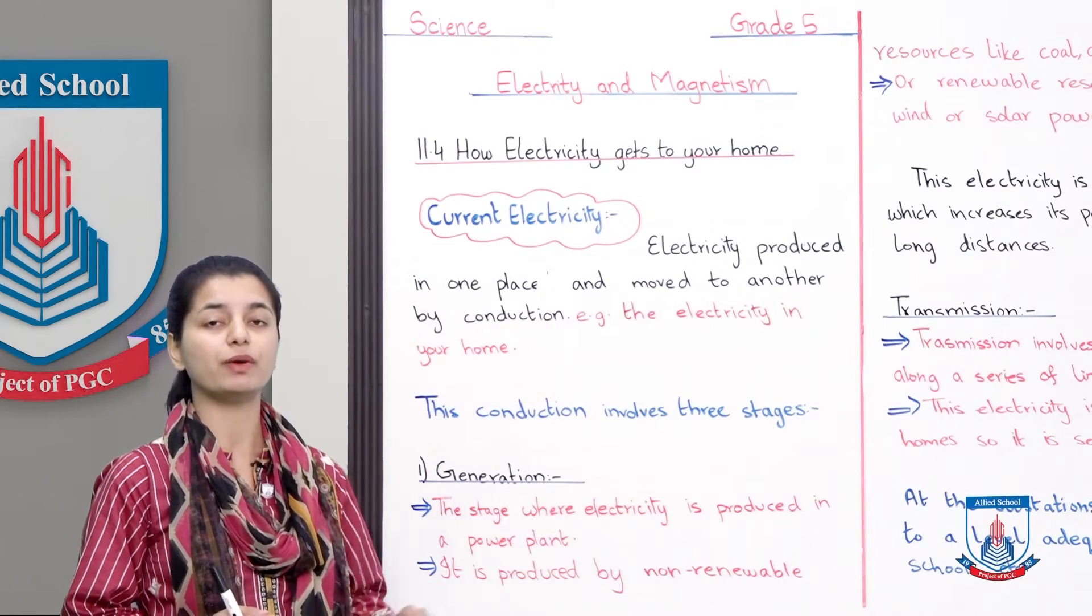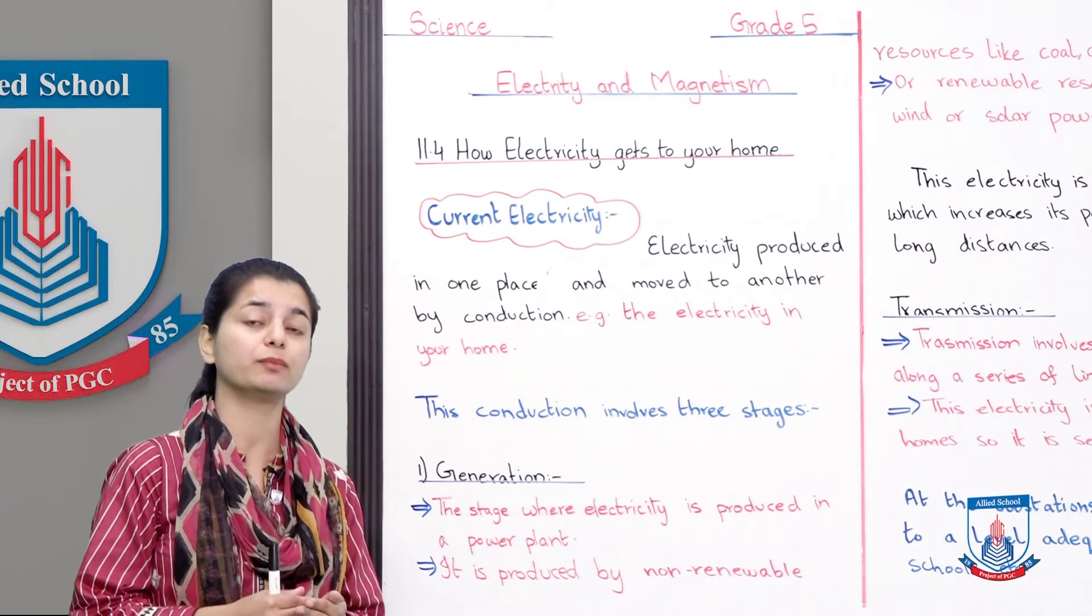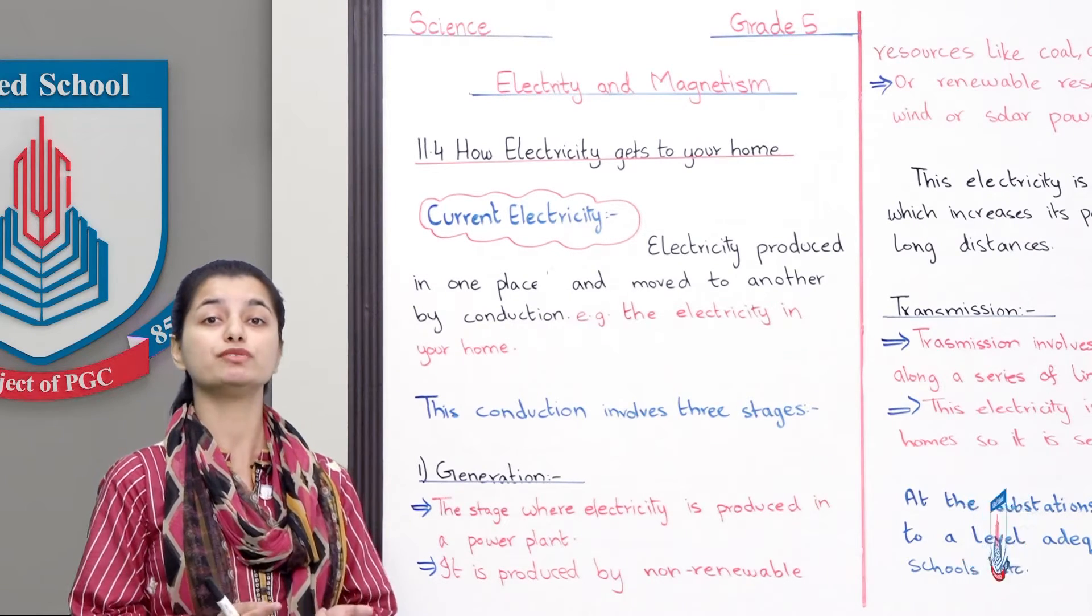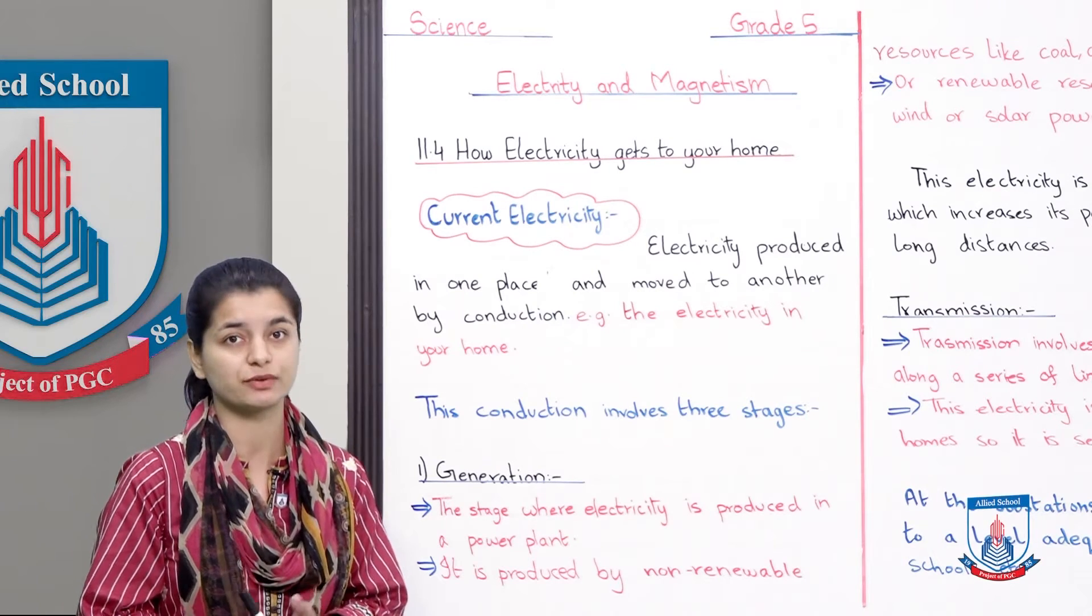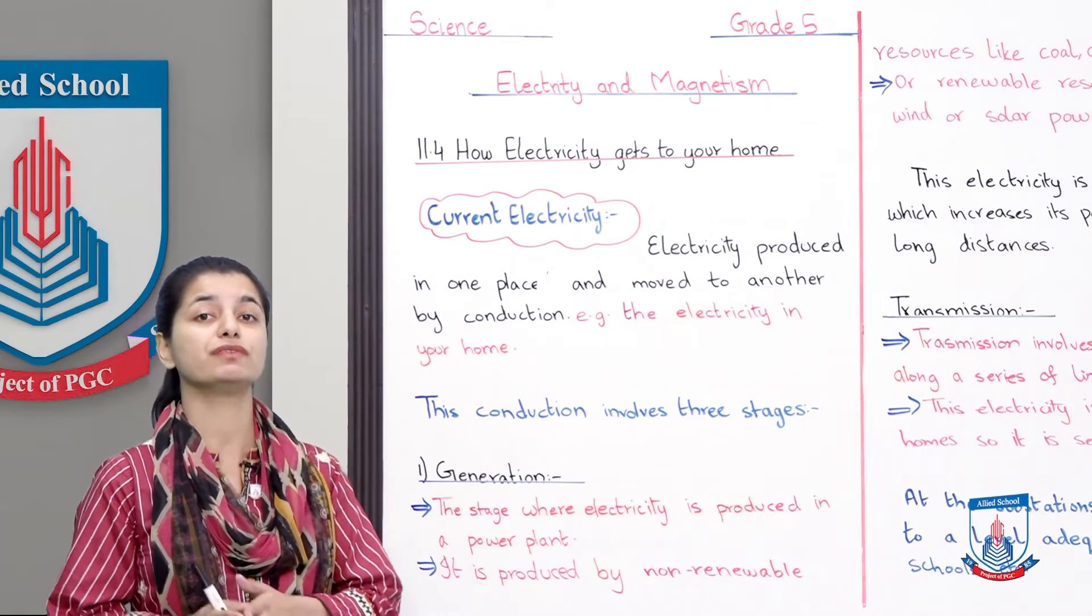The electricity is produced elsewhere and then through underground wires or different methods reaches our homes where we use it. It is not produced in our homes, it is current, it is moving, it comes to the house from a different place.